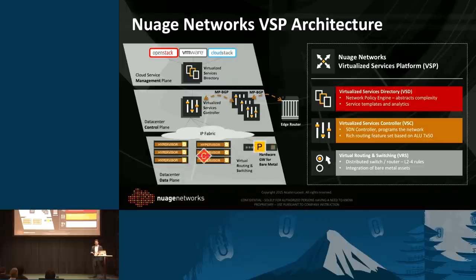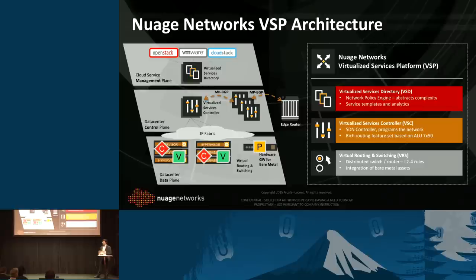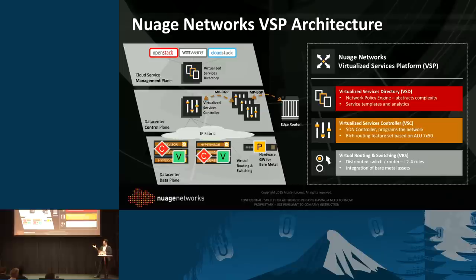The next layer down is the virtualized router and switch, and that basically is an instance of open vSwitch where we modify the user space — we don't modify the kernel space — and then we install that on the hypervisor. That's where you get the distributed routing and switching functionality all the way at the endpoint, at the entry of the virtual machine into the network. We also support containers, VMs, as well as physical appliances through a gateway functionality, whether it's the VSG or the virtual router switch gateway.